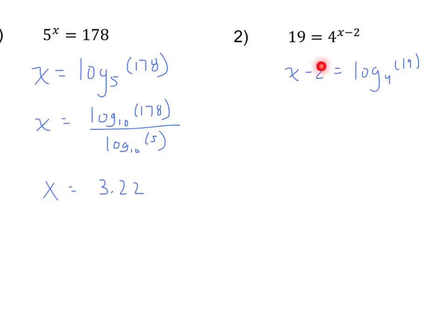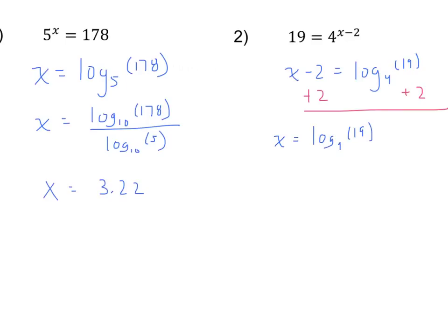To get x by itself, I'm going to add 2 to both sides. And let's be clear here — we don't do 19 plus 2 equals 21, because this 2 is outside the log. So our answer would be x equals log base 4 of 19 plus 2. When you enter that into your calculator, you would do log base 10 of 19 divided by log base 10 of 4, and then add 2 to all of that. When you do that on your calculator, you should get 4.12.